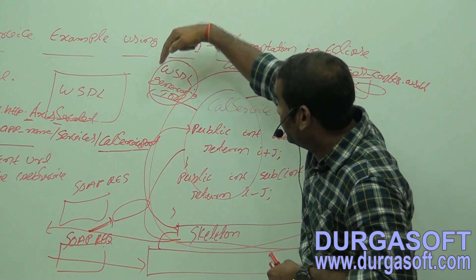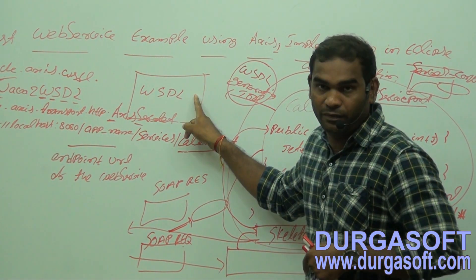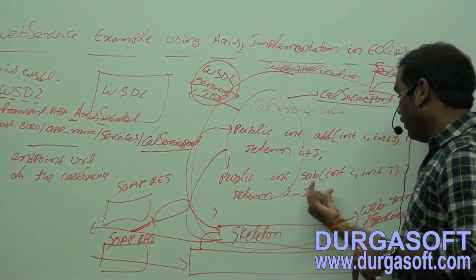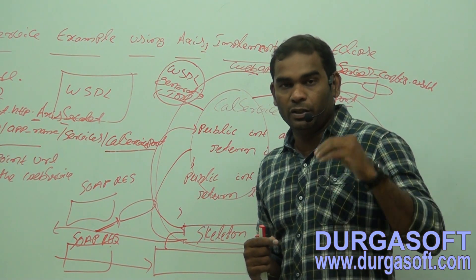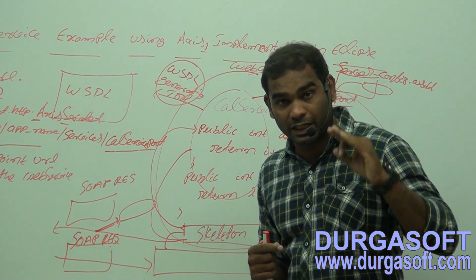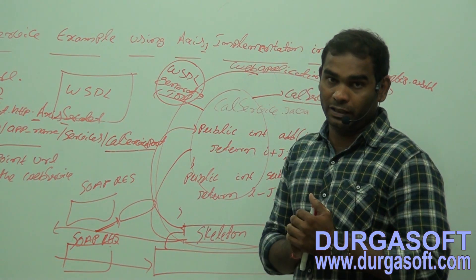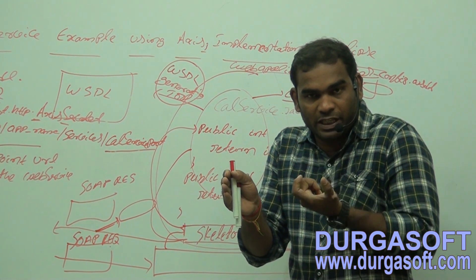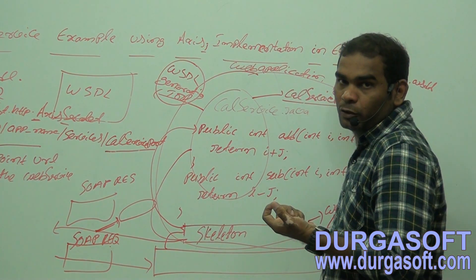Eclipse internally uses the Java2WSDL class to generate the WSDL file and configures Axis1 in your web.xml file. But you need to choose which implementation you are using — Axis1, Axis2, or Apache CXF. Based on your choice, Eclipse will use the corresponding WSDL generation tool, skeleton, and configuration file.